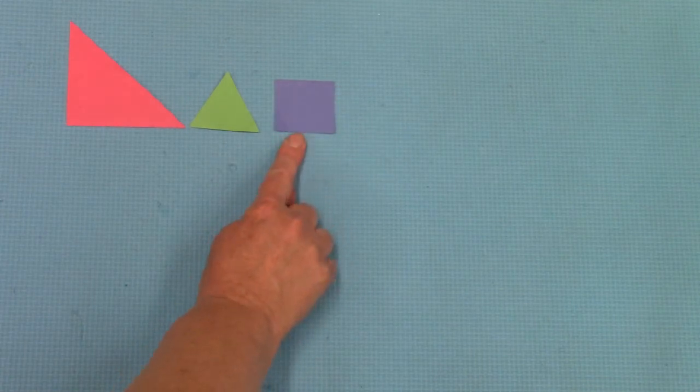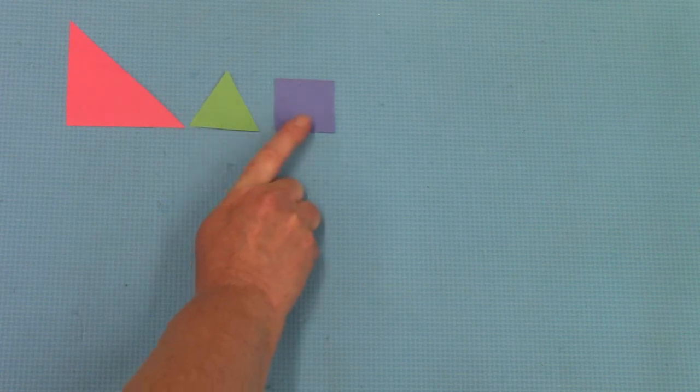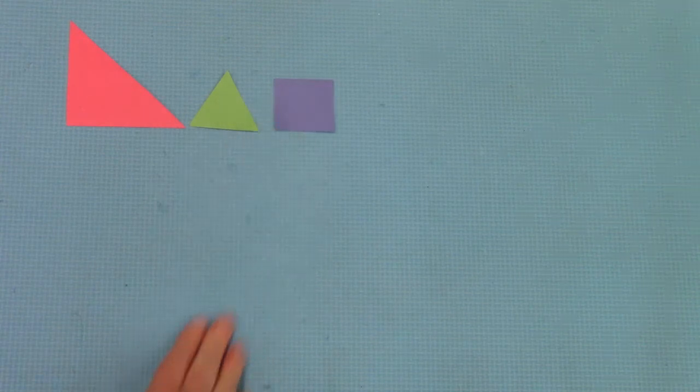I'm gonna put a blue one next. Green, blue. They're different in color. Triangle, square. They're different in shape. There's only one way they're the same and that is size.